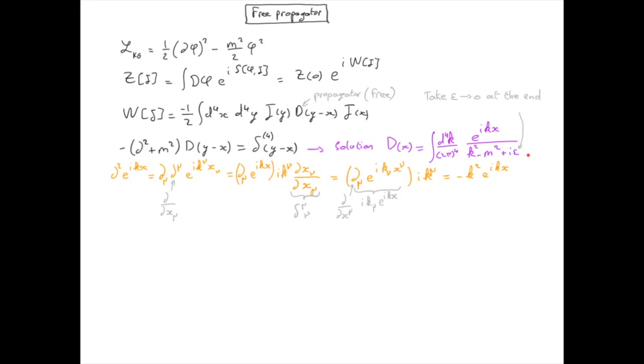We can now verify that this is the correct expression for the propagator. I can now take the limit of epsilon goes to zero because I have a division of the same quantity in the numerator and in the denominator.